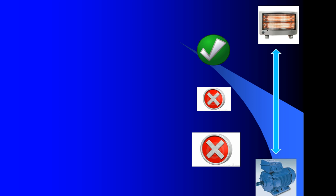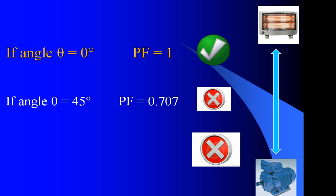Examining power factor: if the angle theta is zero degrees, then we have a power factor of one, which is ideal. If the angle theta is 45 degrees, the power factor — being the cosine of 45 degrees — is 0.707. And in the extremely bad case, where the angle is 90 degrees, the power factor is zero.